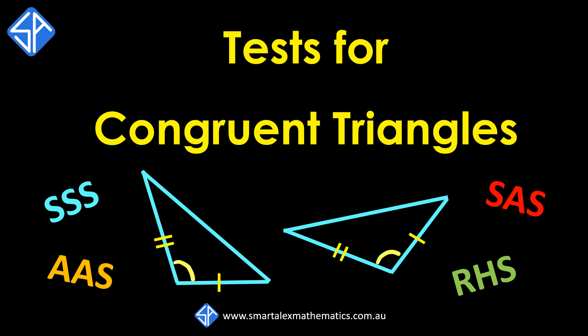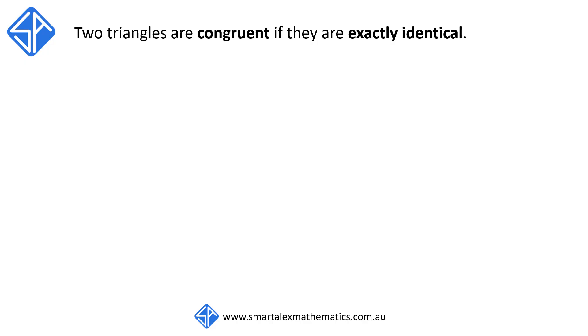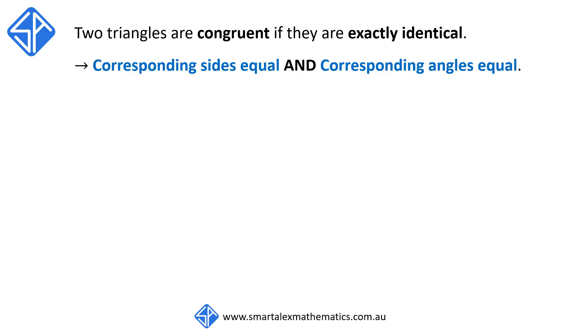In this video, we're going to look at how to apply the four tests to prove two triangles are congruent. If two triangles are congruent, it means that they are exactly identical. This means that they must have corresponding sides the same, and the corresponding angles must be equal as well.